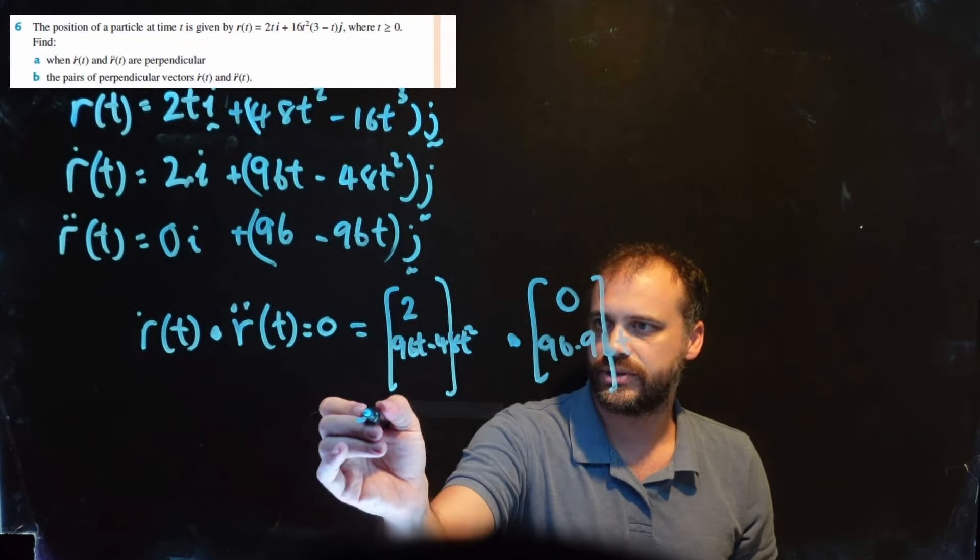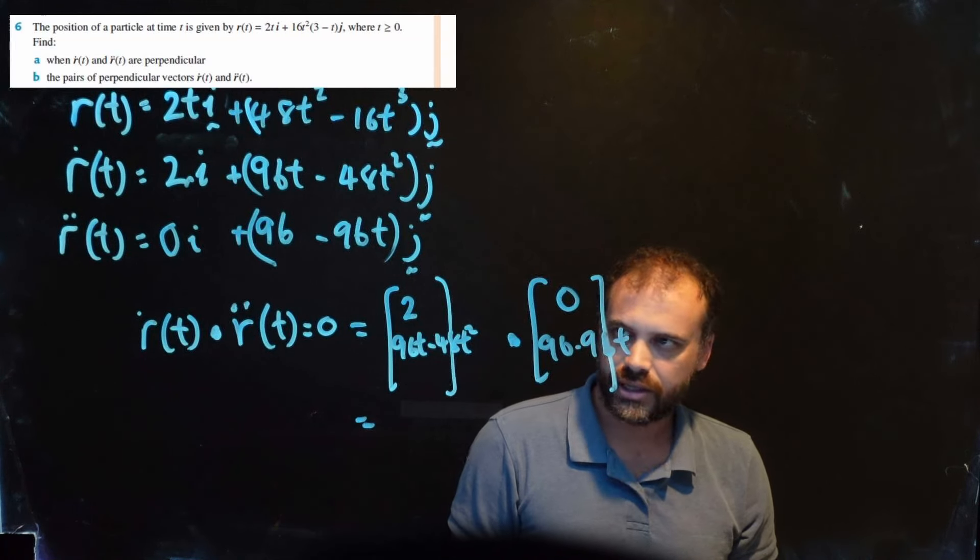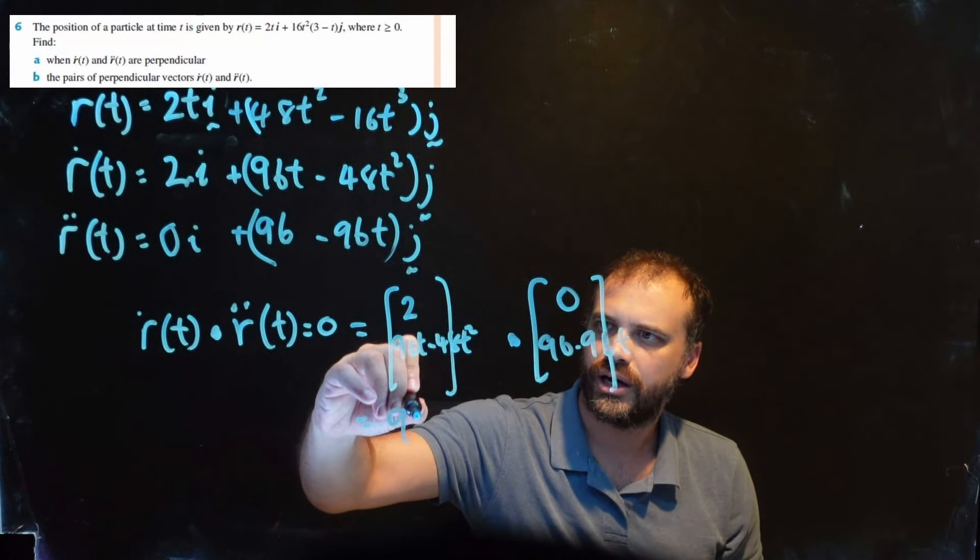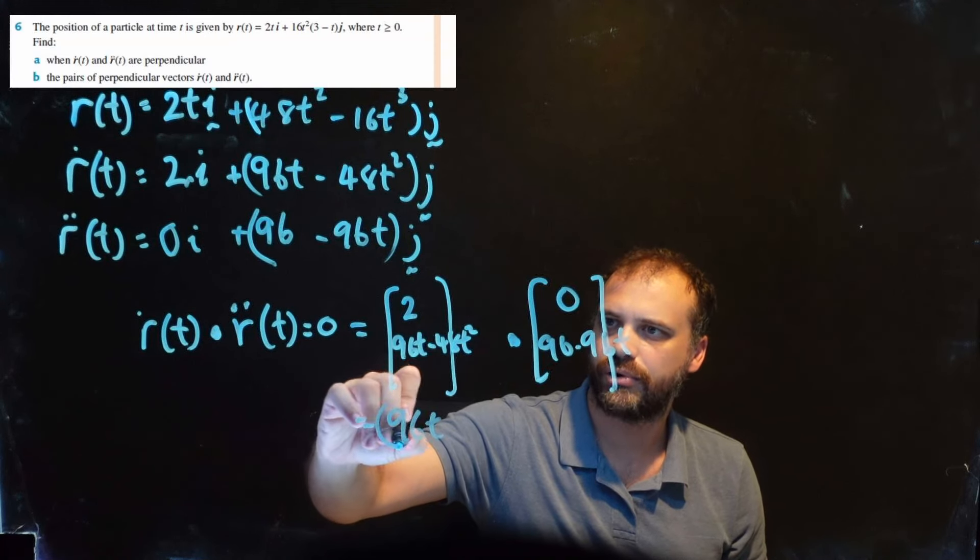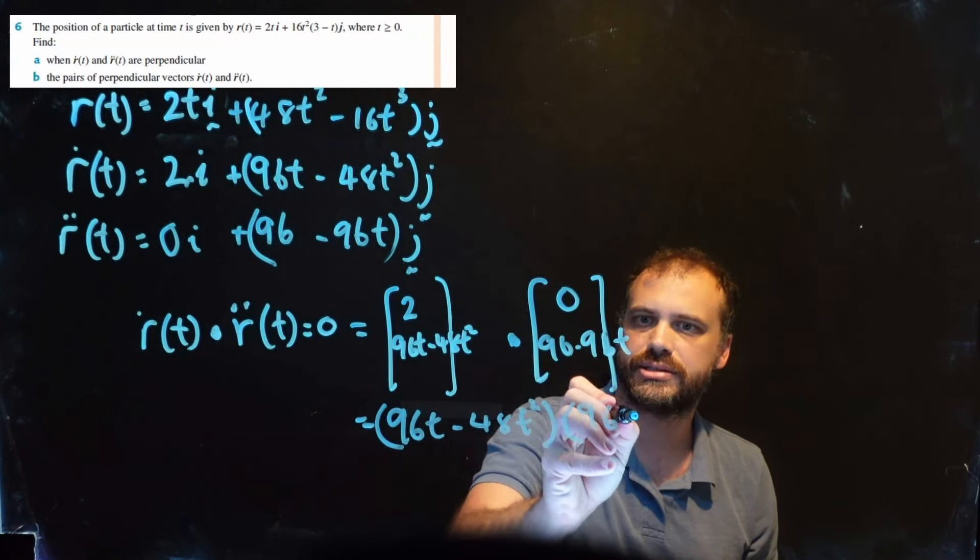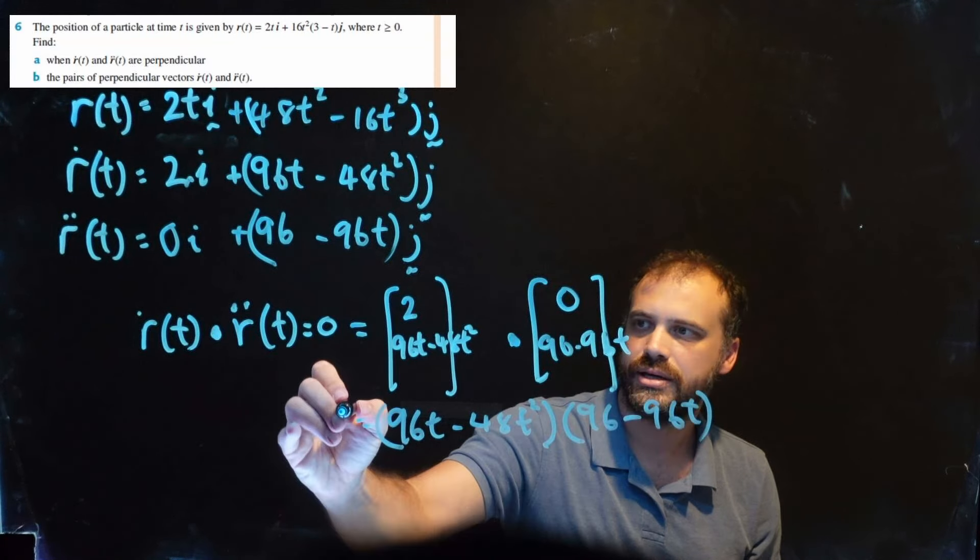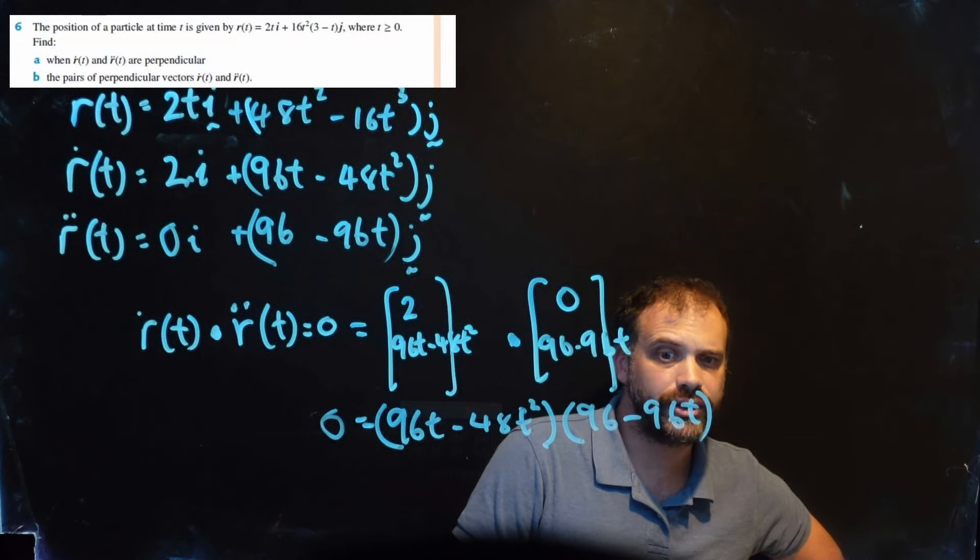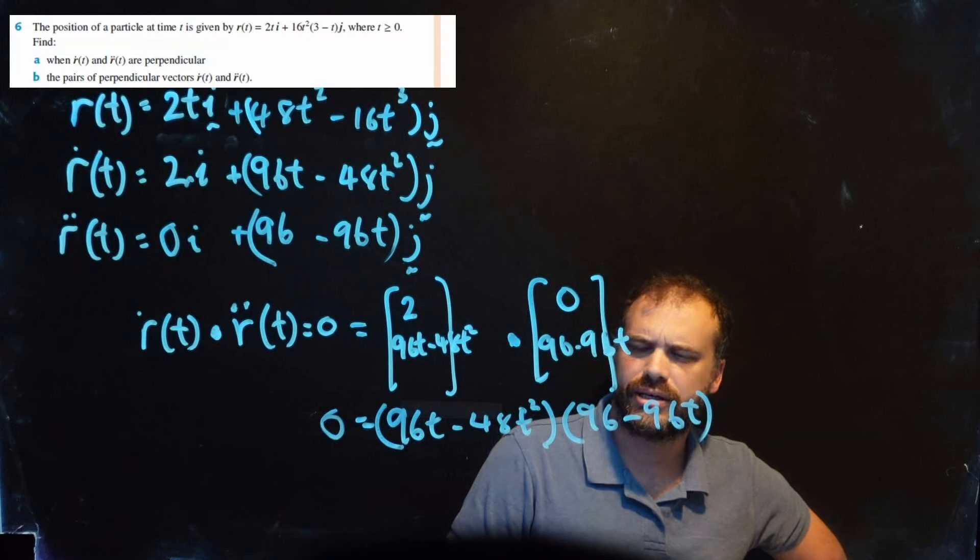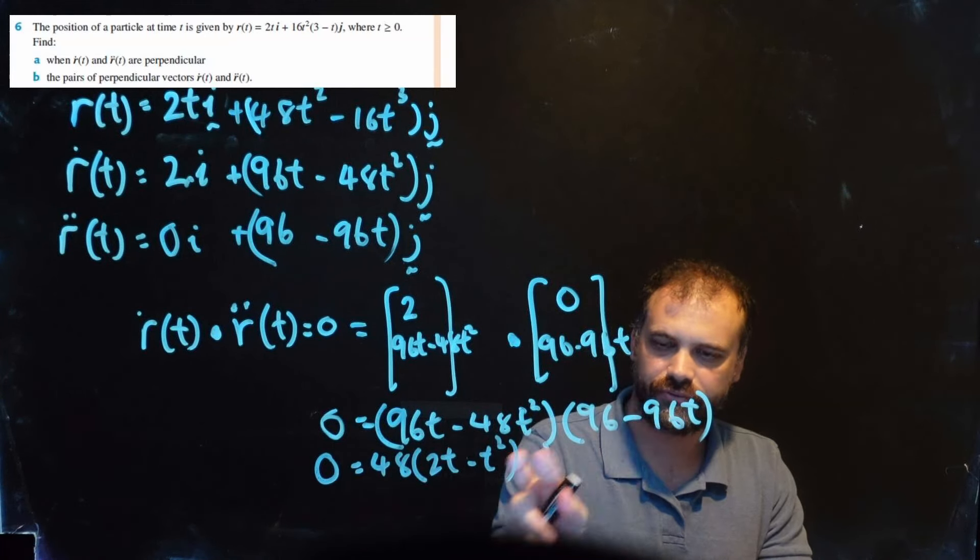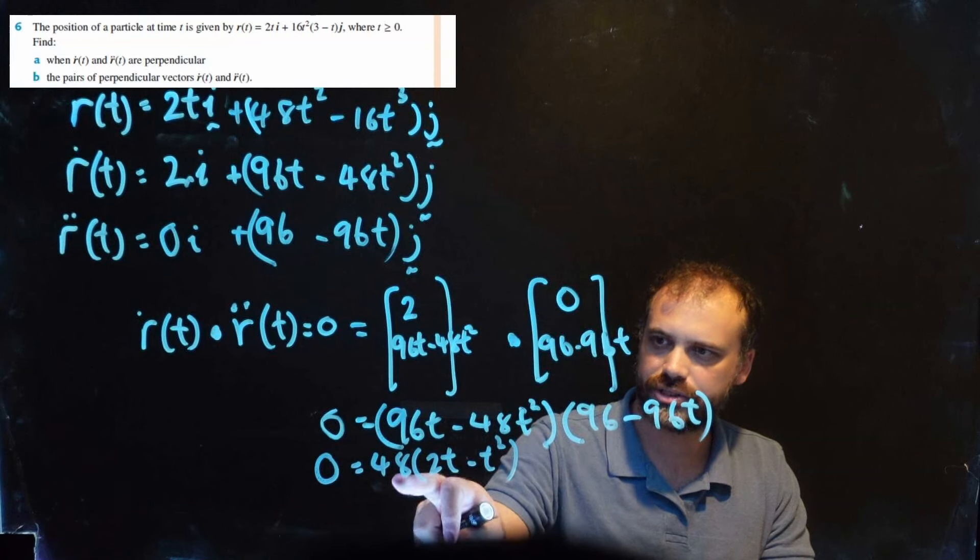Doing the dot product is relatively straightforward because 2 times 0 is 0. And then what I'm left with is something that feels pretty gross. I end up with (96t - 48t²)(96 - 96t) = 0. It looks like I have a cubic that I need to solve. Not a big fan of that. What I am noticing is I could take 48 out of here. And in fact, not only just 48, but I could also take 48t out.